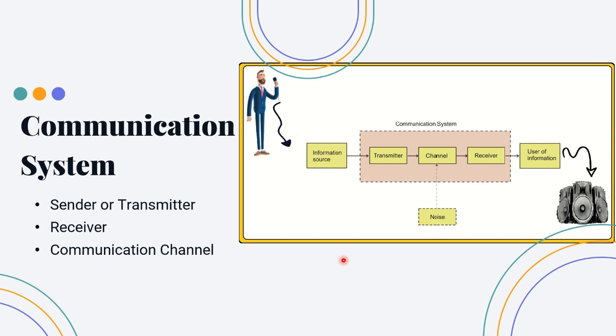Thus, for the signal to be transmitted over a long distance, the TV broadcasting station is essential, and to receive the signals which are present in the air, TV set is essential. In this communication system, TV broadcasting station is a transmitter and the TV set is a receiver.